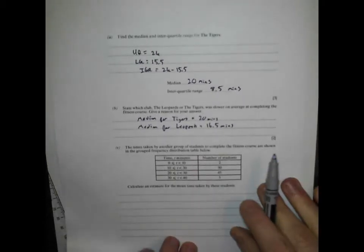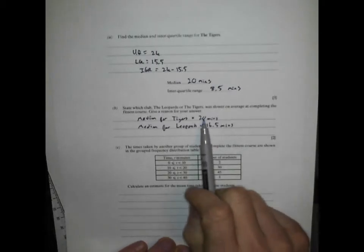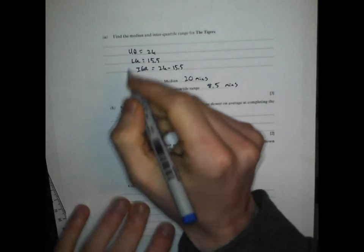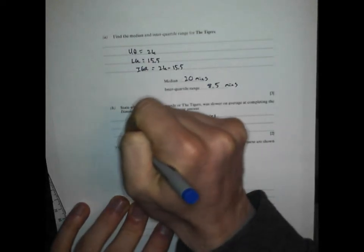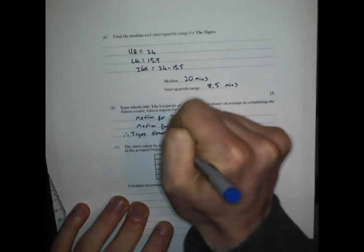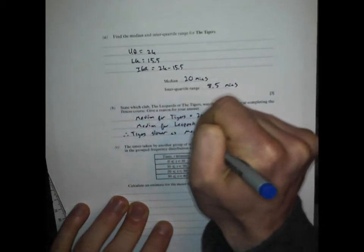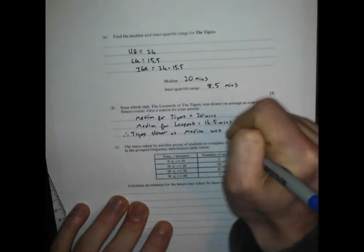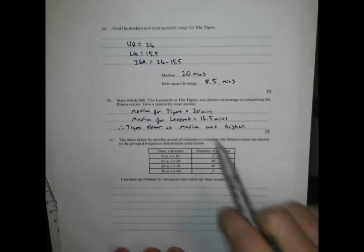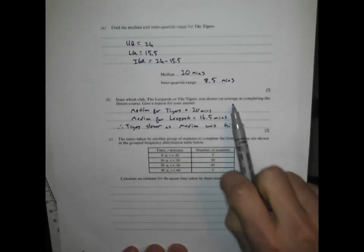Who's slower on average? The Tigers took 20 minutes on average, the Leopards took 16.5 minutes. Therefore, Tigers slower as median was higher. If it mentions anything about average, it's all about the median. If it mentions spread, it's all about the interquartile range.